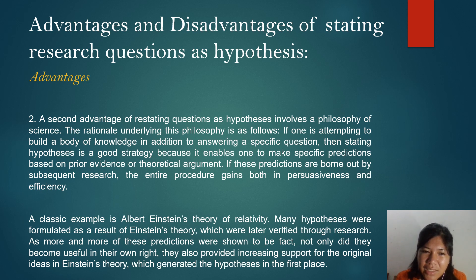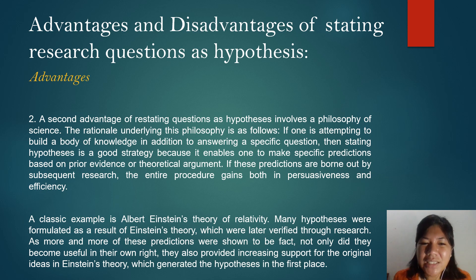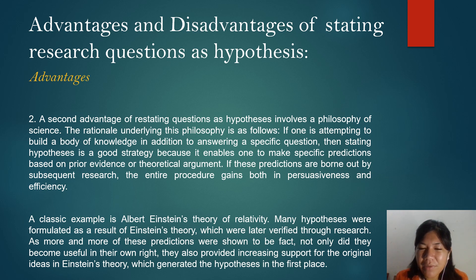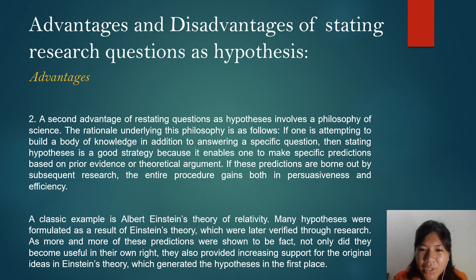A classic example is Albert Einstein's theory of relativity. Many hypotheses were formulated as a result of Einstein's theory, which were later verified through research. As more and more of these predictions were shown to be fact, not only did they become useful in their own right, they also provided increasing support for the original ideas in Einstein's theory which generated the hypotheses in the first place.